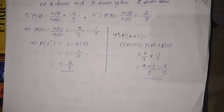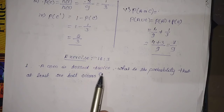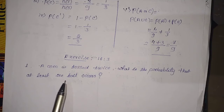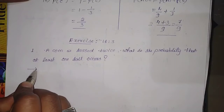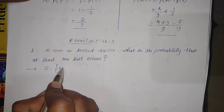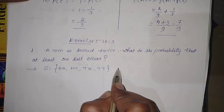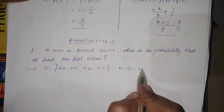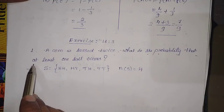Next is exercise 16.3, the last exercise in this chapter. Problem: a coin is tossed twice. What is the probability that at least one tail occurs? The sample space contains 4 elements: {HH, HT, TH, TT}, so n(S) = 4.